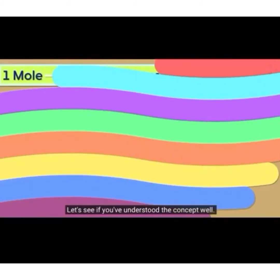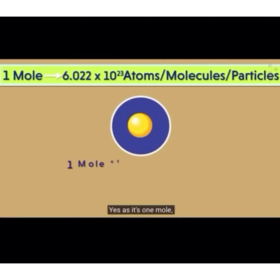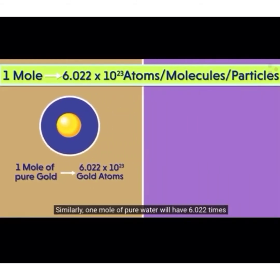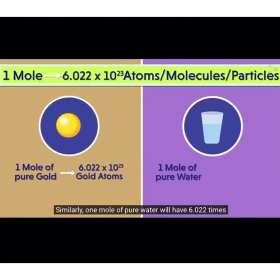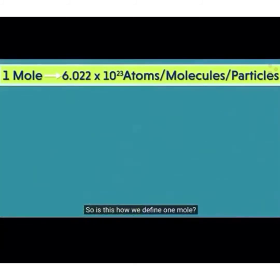Let's see if you've understood the concept well. Here's one mole of this pure gold — how many atoms does it have? As it's one mole, it will have 6.022 times 10 raised to 23 atoms in it. Similarly, one mole of pure water will have 6.022 times 10 raised to 23 water molecules inside it. So is this how we define one mole? 6.022 times 10 raised to 23 atoms or molecules or particles.